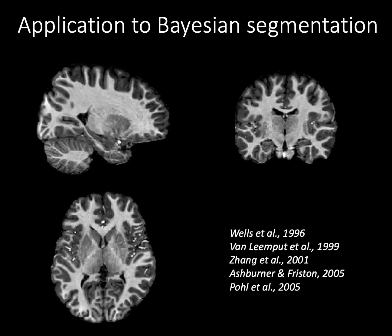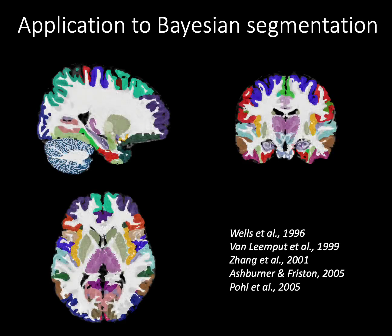Using a well-established body of Bayesian segmentation methods, we can use the atlas to automatically segment brain regions from MRI scans of living people. Here's an example of an input scan and the automatic segmentation given by the atlas.